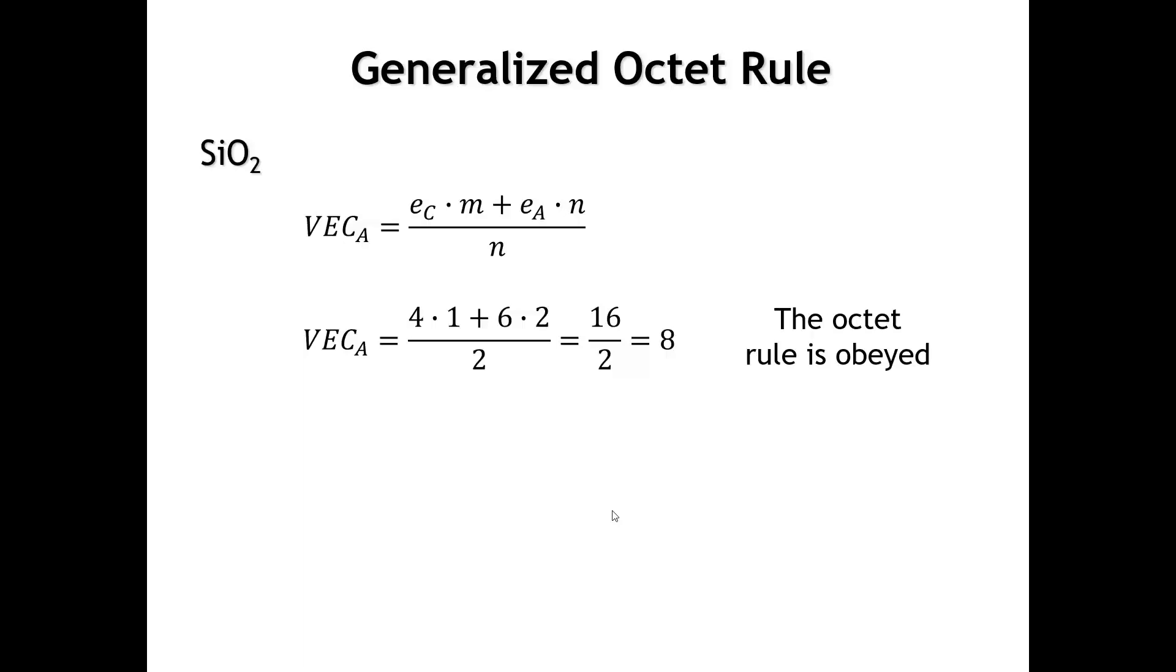You know, at this point, you're saying, I don't know, that seems like kind of an elaborate way to tell me something I already knew. But the point here is that we're keeping track of the electrons. It doesn't matter whether the compound is highly ionic or, in fact, quite covalent, as long as we can identify a more electropositive element and a more electronegative element.